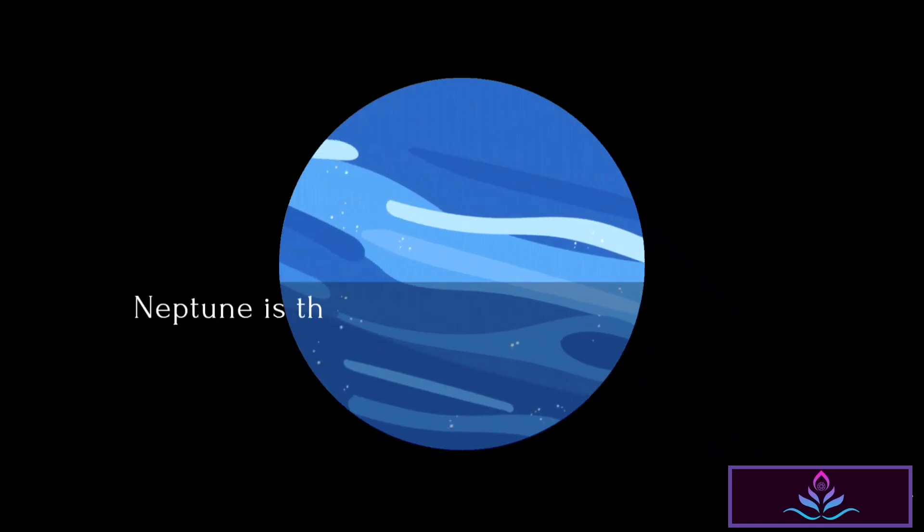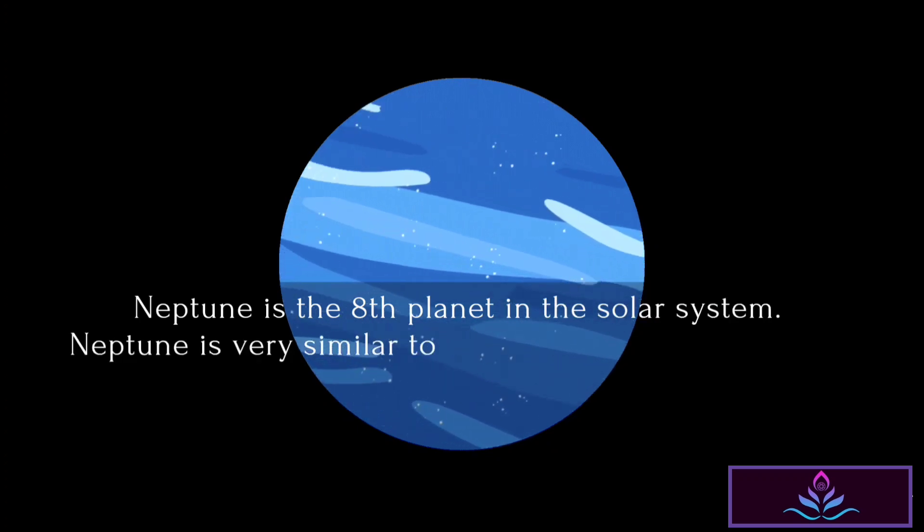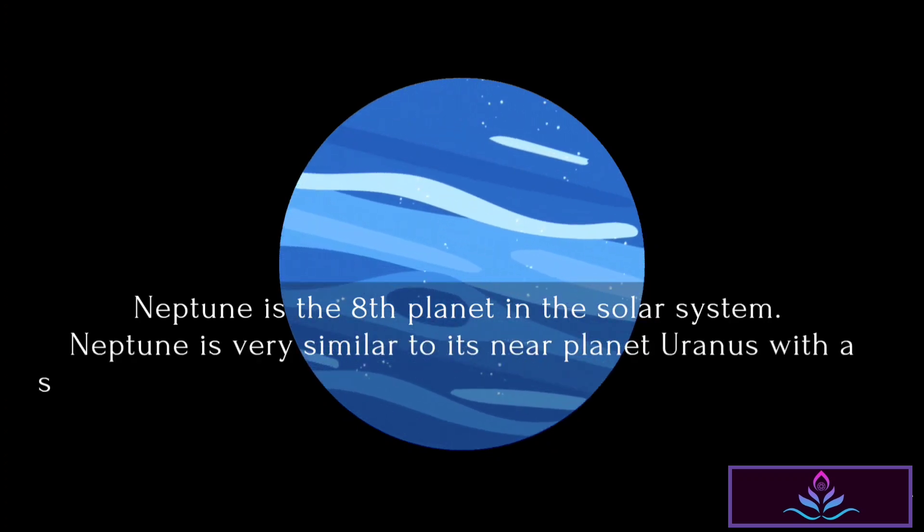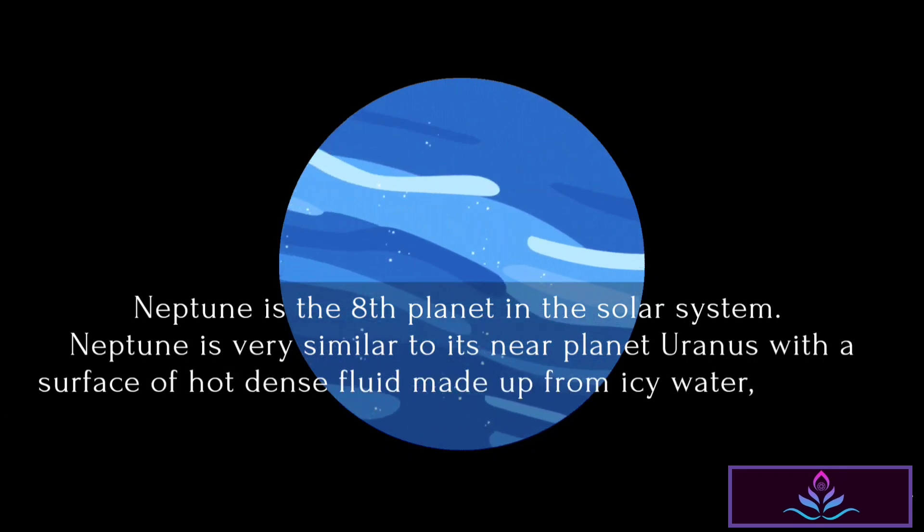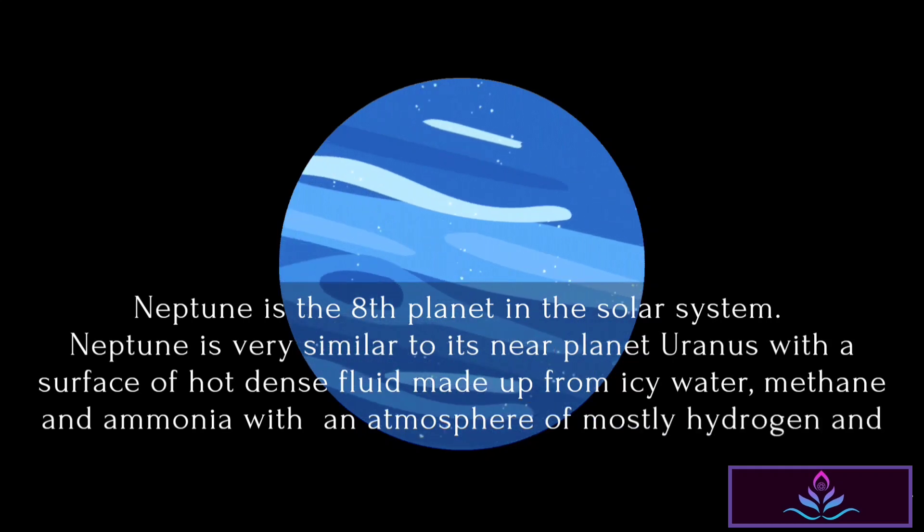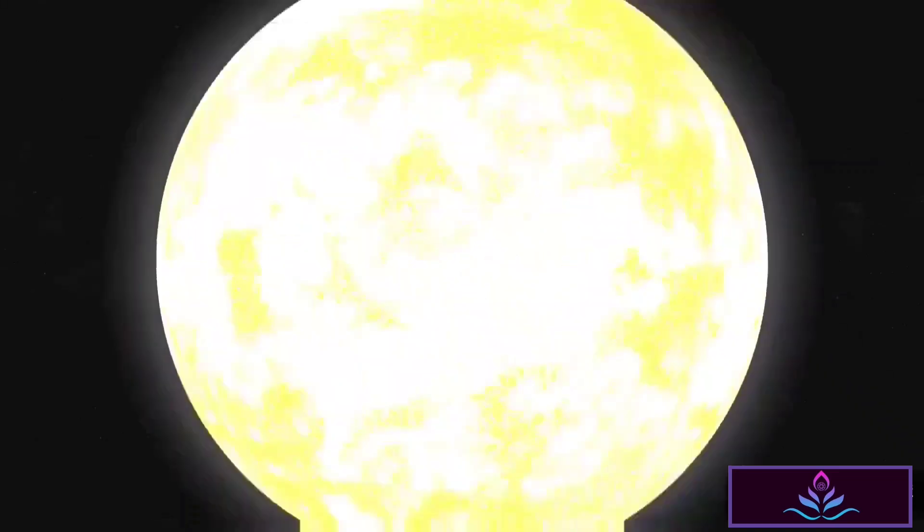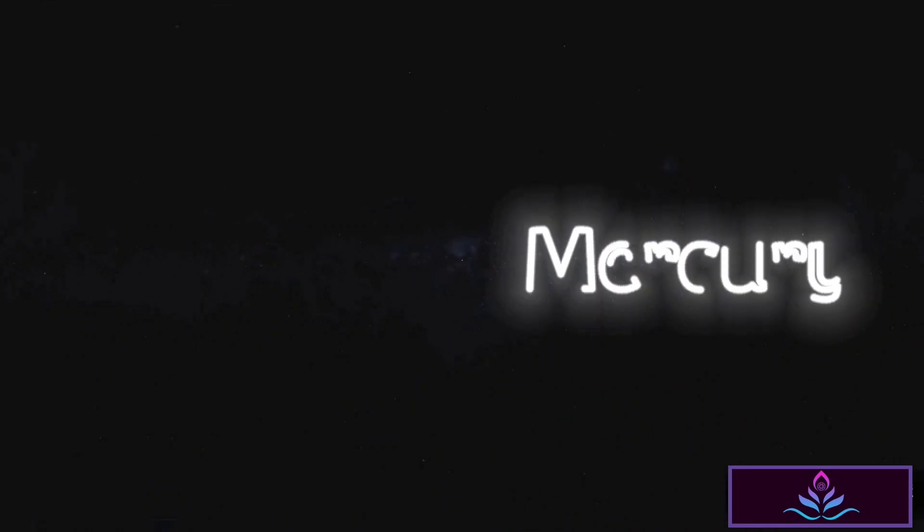Neptune is the eighth and last planet in the solar system. Neptune is very similar to its near planet Uranus, with a surface of hot, dense fluid made up from icy water, methane, and ammonia, with an atmosphere of mostly hydrogen and helium, as well as methane. So these are the eight planets in our solar system.